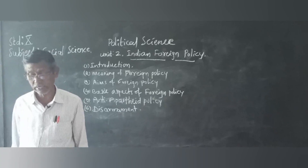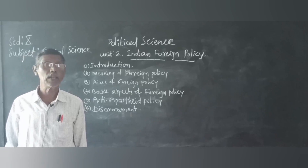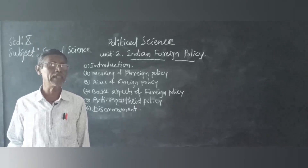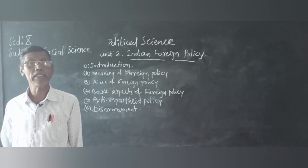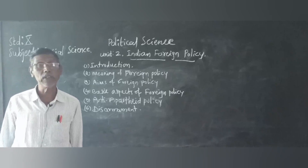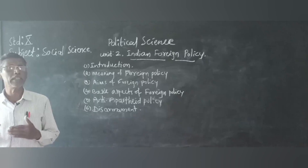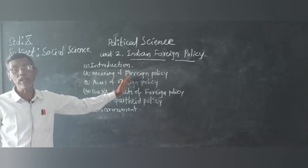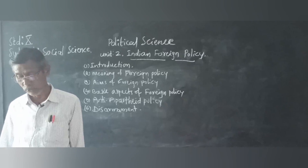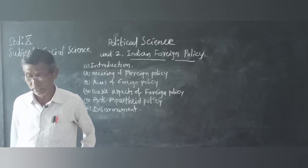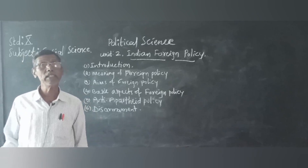A sovereign country is one which is not under the control of any other country. India is a sovereign democratic country. It is not under the control of any other countries of the world, either for its internal or external issues. We are independent, not under the control of any other countries. It is important that India had its own foreign policy both before independence and after independence.